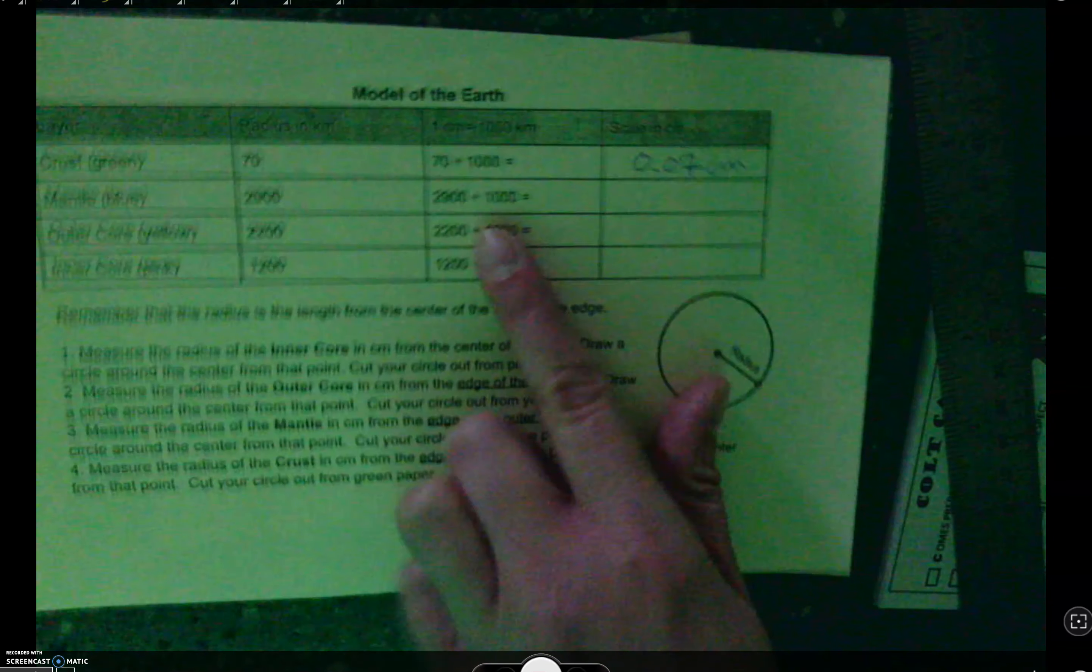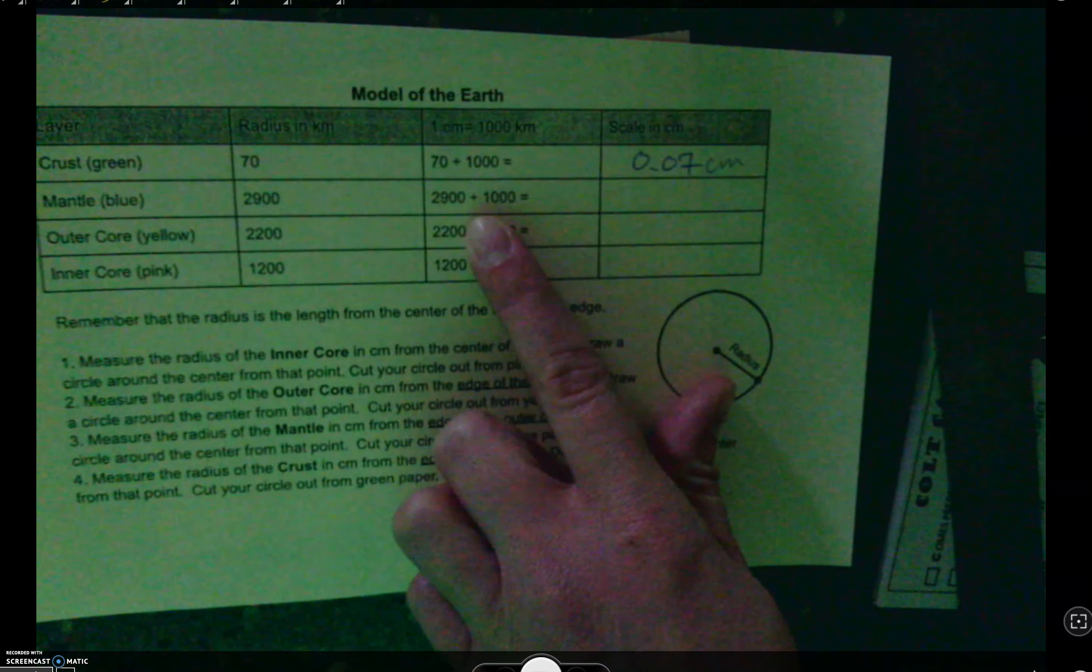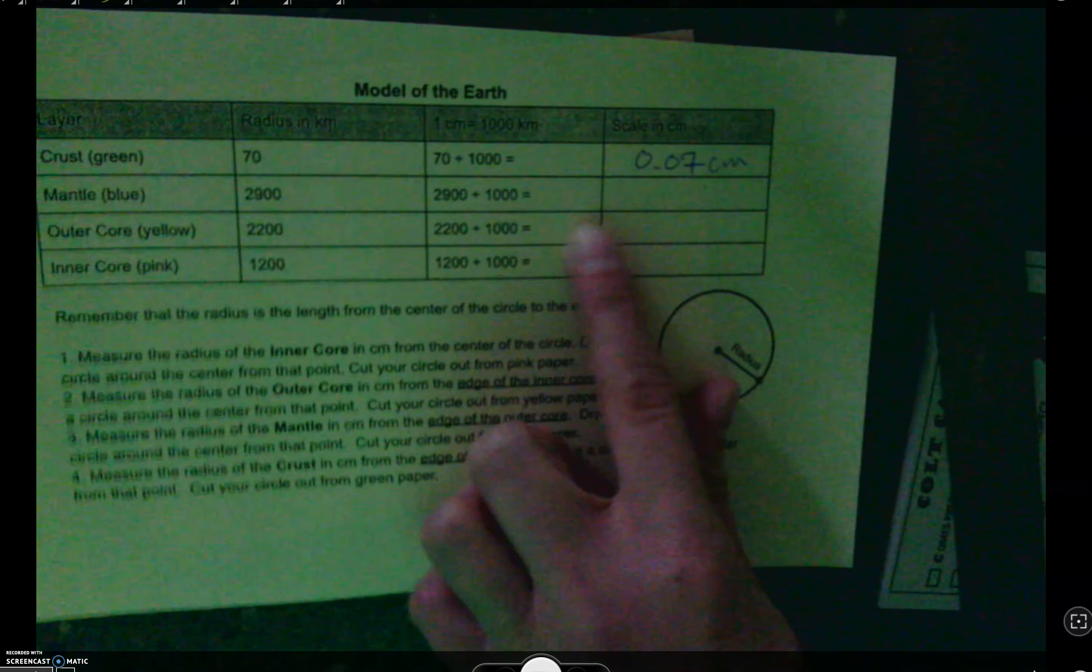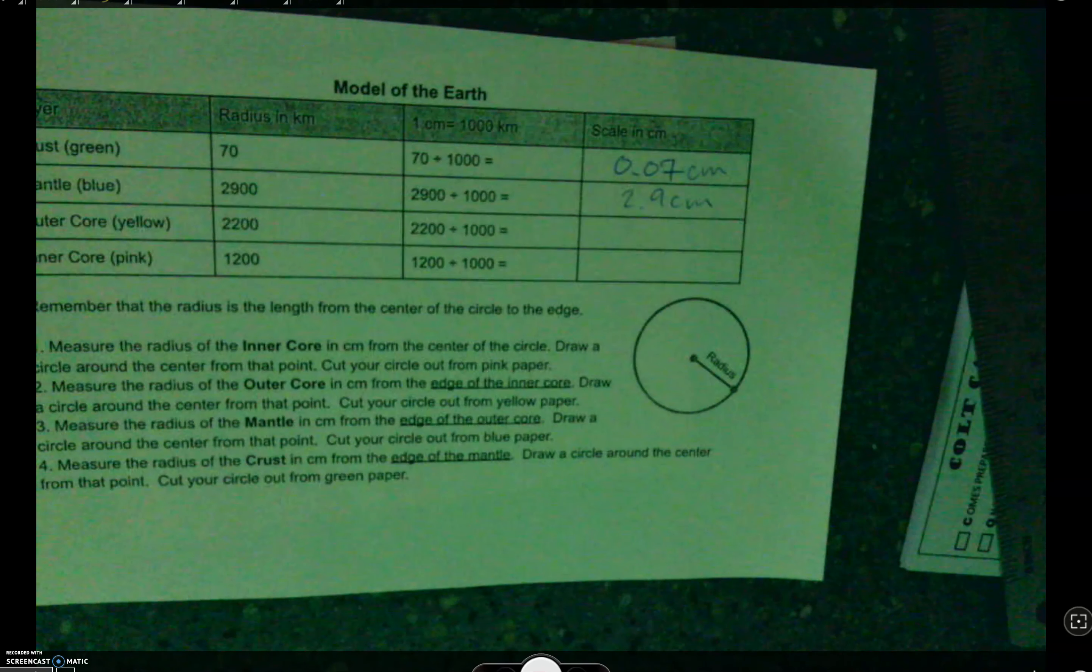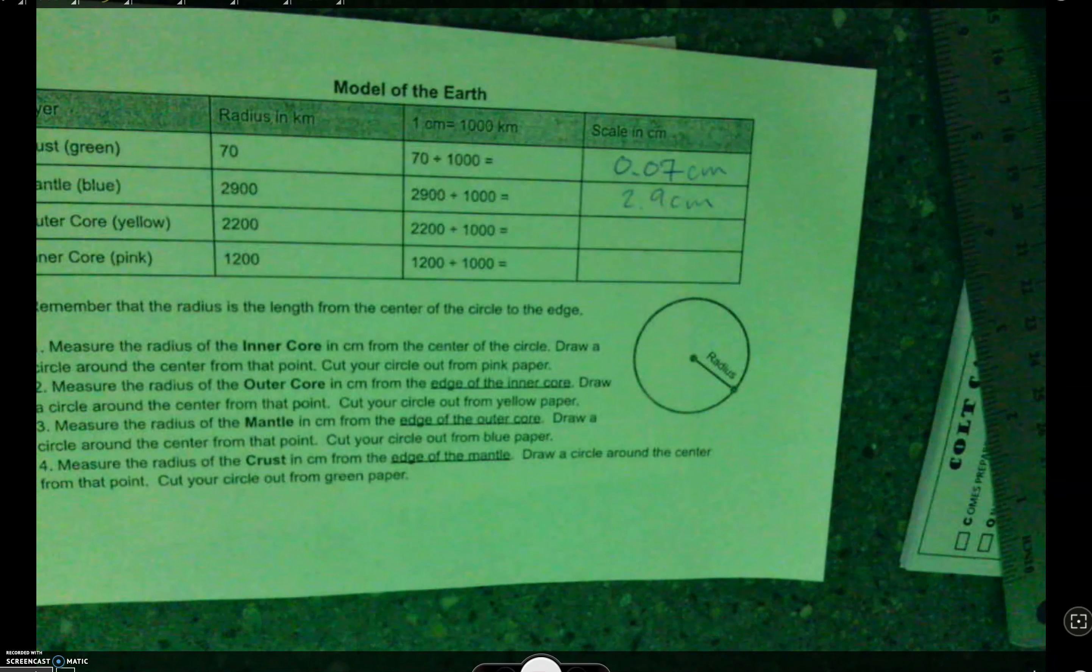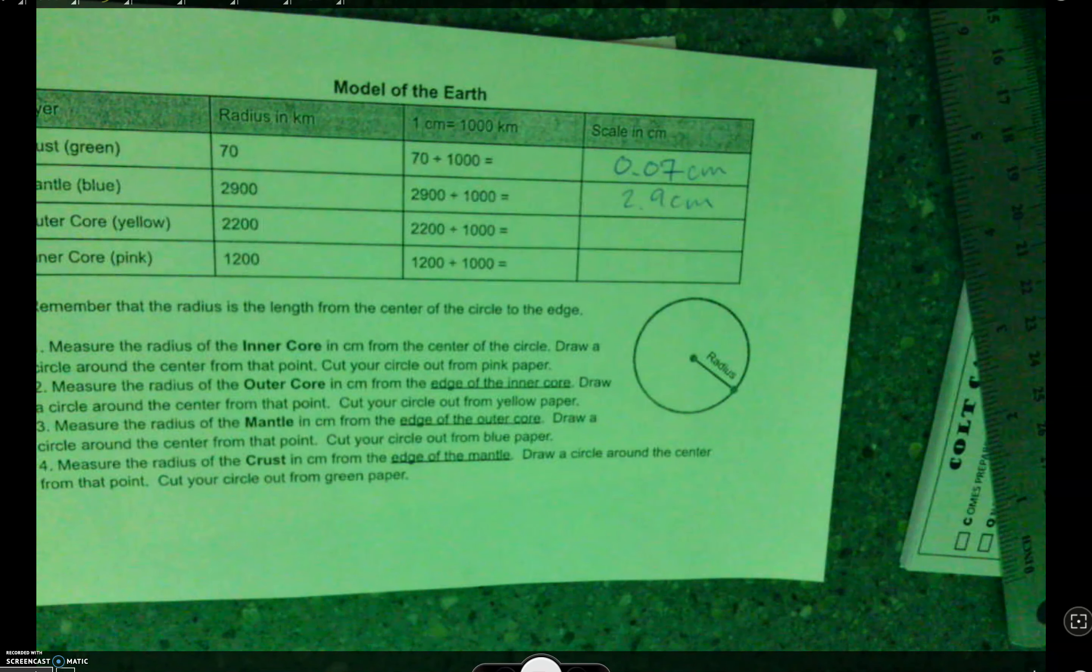Now go ahead and do the mantle for me. You need to do 2,900 divided by 1,000. Addie. Awesome. I like that Addie said centimeters. She didn't just say 2.9. She said 2.9 centimeters. Very good. That's going to be easier to do than 2,900 kilometers, right? Raise your hand, please, and tell me the next one.